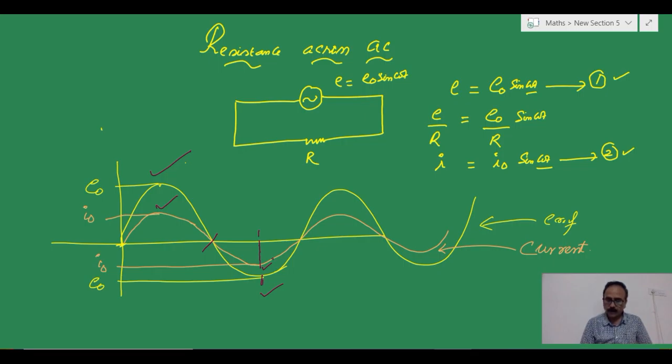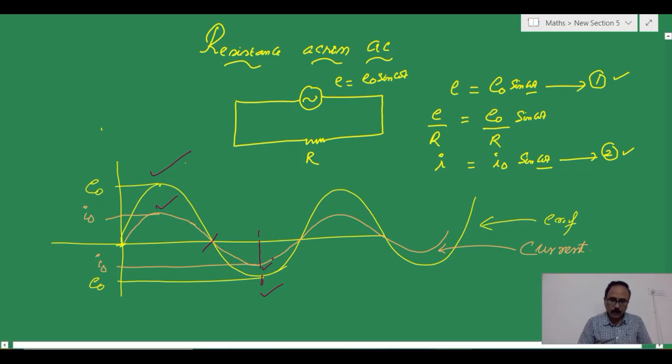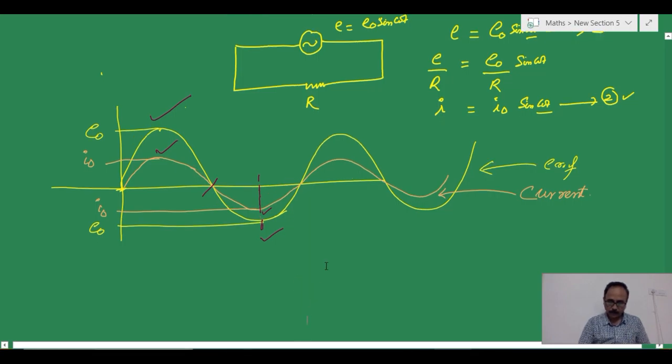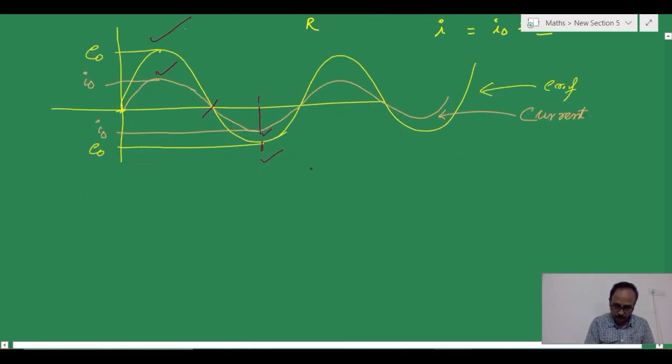The same is the case when the direction is reversed. Here, we find that at this particular point of time, the EMF is showing negative peak. And here at the same time, the current is also showing the negative peak. So, from this we can say that the EMF and current are in the same phase, or we can say that the phase difference is 0.